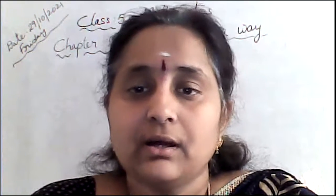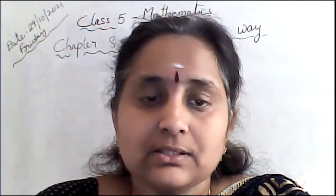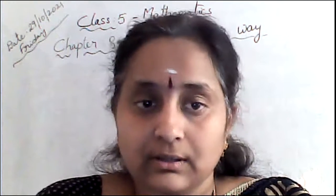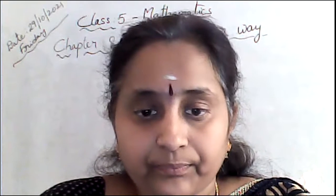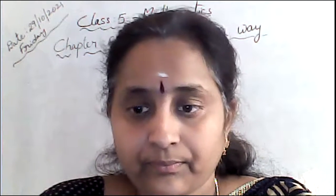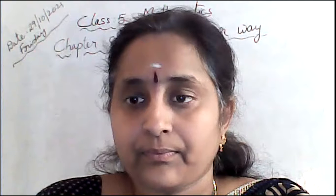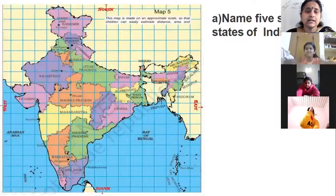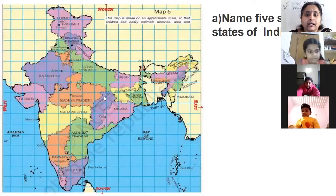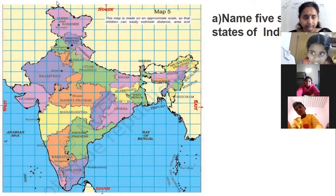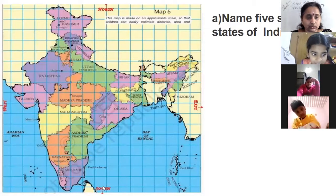Good morning children, welcome back to our mathematics online class. In last class we discussed about maps, so let us continue the remaining part. Look at the map clearly. Name five southern states of India — that means the south side. What are the states? We have five states. You can see the directions here: north, east, west, south.